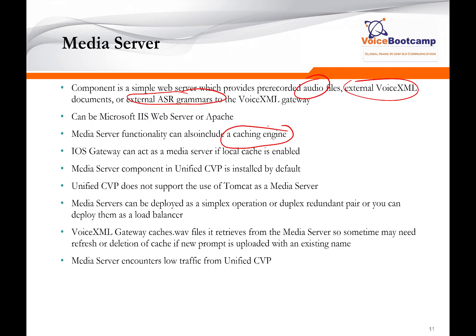Cisco Unified CVP does not support the use of Tomcat as a media server. The media server can be deployed in a simplex operation with the WAN, or can be redundant in a duplex environment. You can run multiple media servers behind a load balancer to provide high availability. The VXML gateway will cache the web files it retrieves from the media server, so subsequent calls for the same file are served from the router's flash cache, as opposed to calling the media server again.